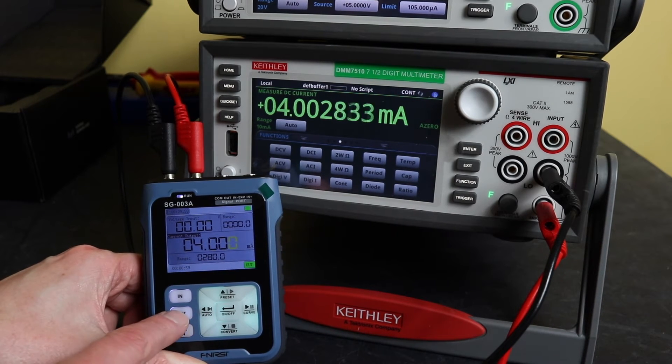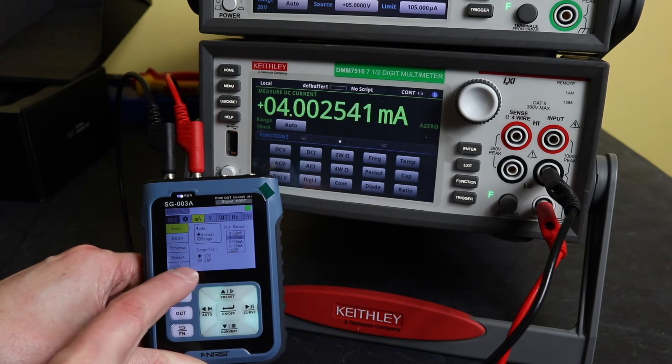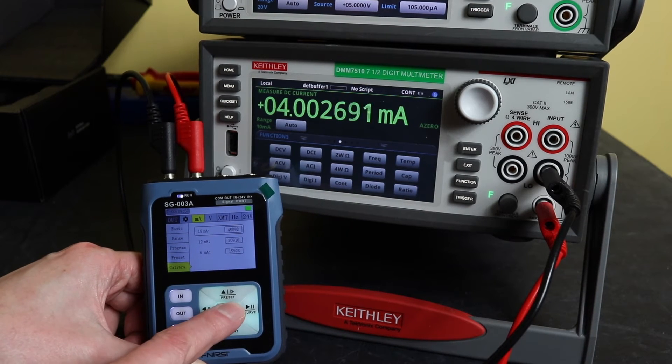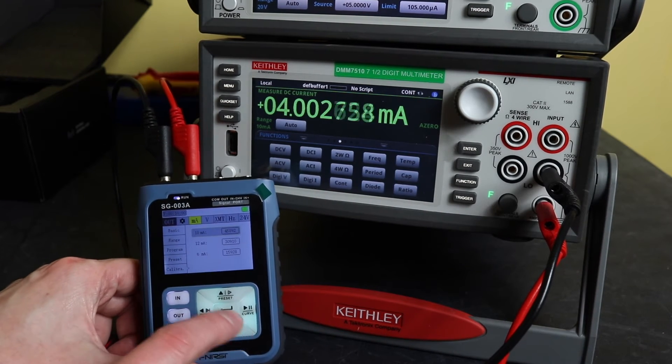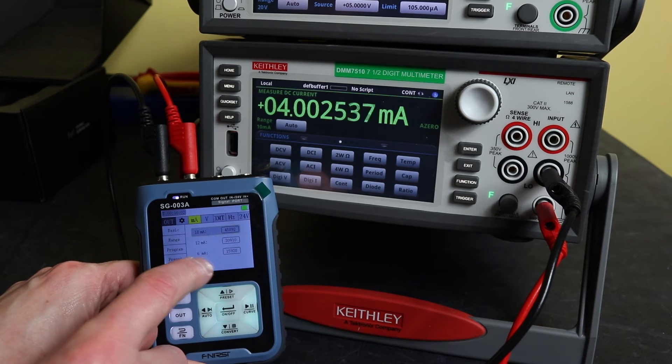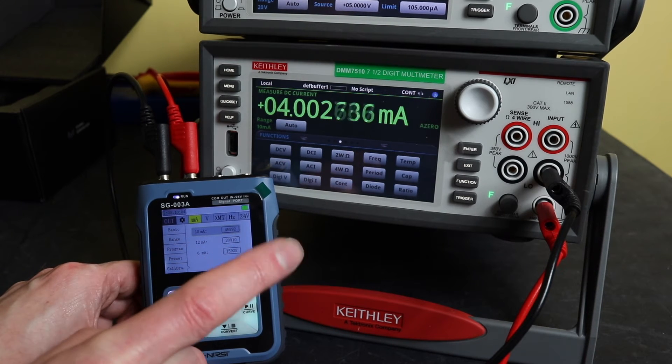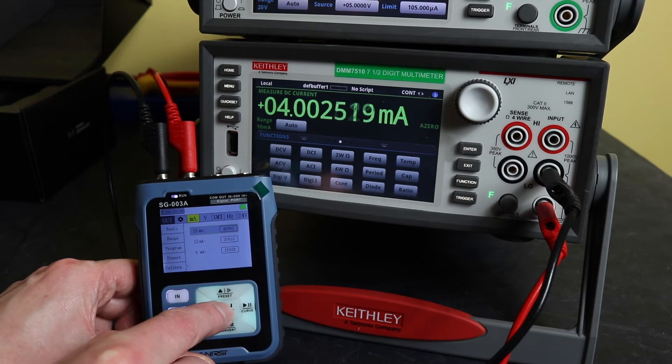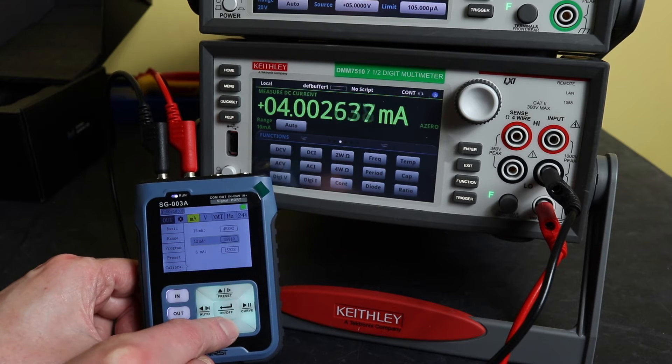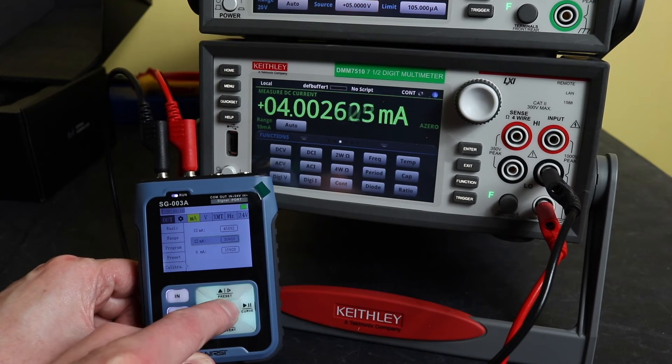But anyway, to do the source functions, we are functioning about around milliamp. So again, calibration is down at the bottom and then you've got for this one 6, 12, and 18. This one changes slightly so when you go to adjust these, whichever one you want to suggest there, enter.